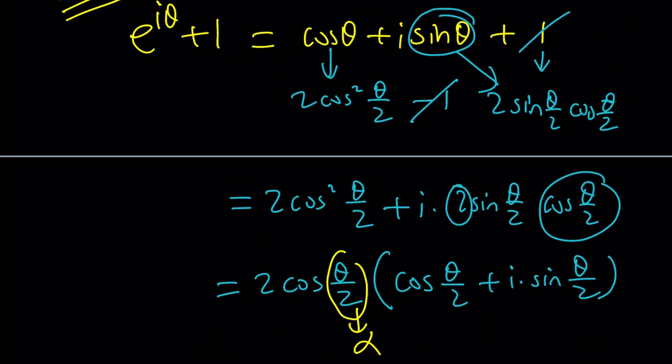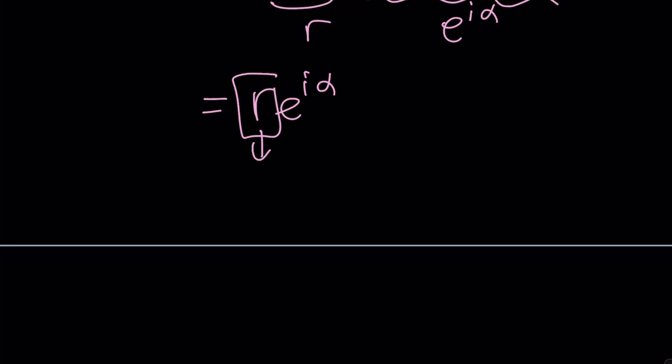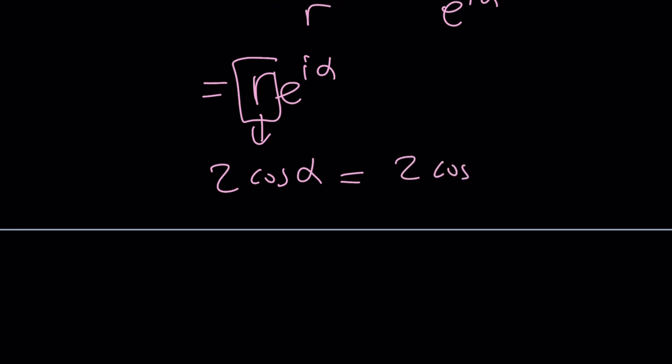Wait a minute. Didn't we get a different answer? Two cosine theta over two? Of course, it's the same one. r is two cosine alpha. But alpha is theta over two. So the answer is two cosine theta over two as before. And this brings us to the end of this video.